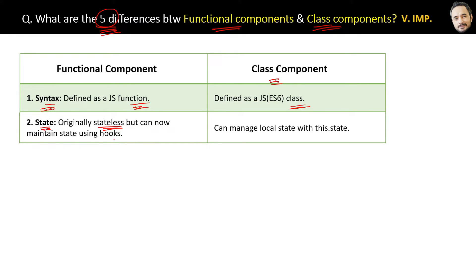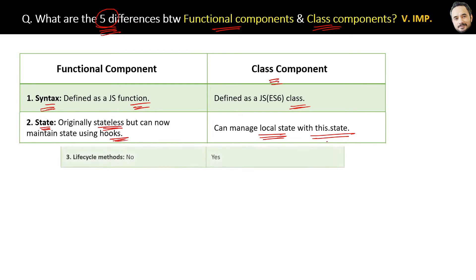The second difference is based on state: functional components were originally stateless but can now manage state using hooks, whereas class components can manage local state with 'this.state'.